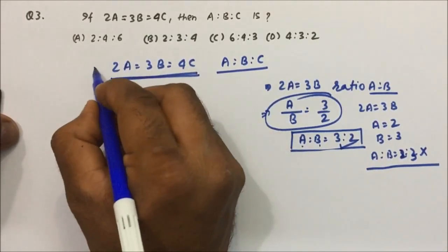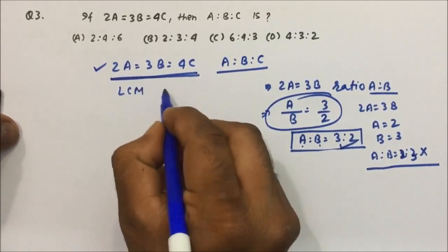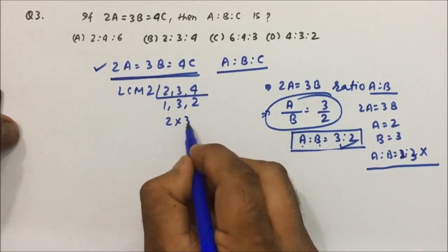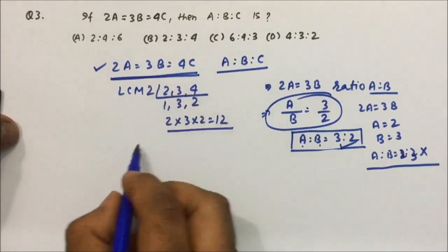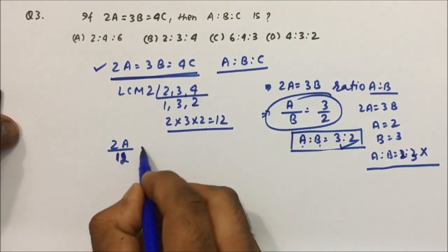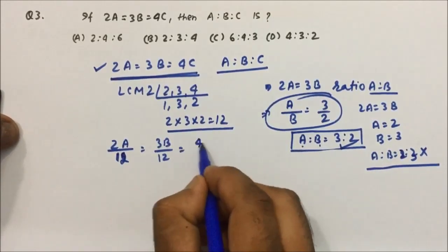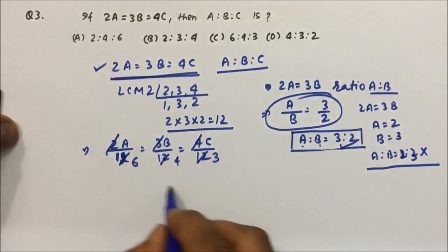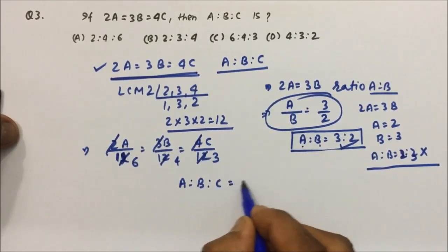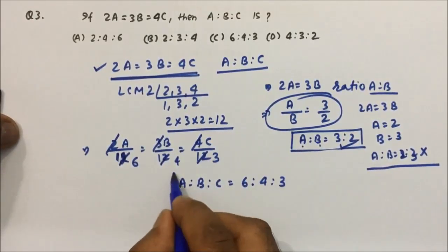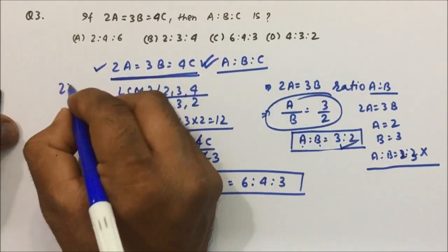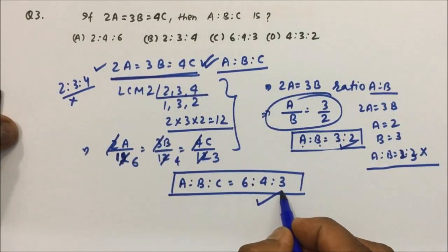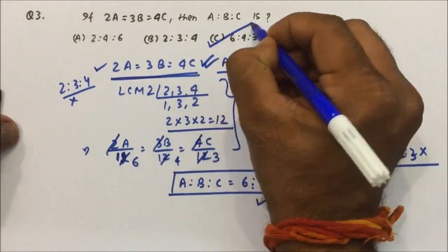For the full equation 2A = 3B = 4C, we take the LCM of 2, 3, and 4, which is 12. Divide the equation by 12: 2A/12 = 3B/12 = 4C/12. This simplifies to A/6 = B/4 = C/3. So the ratio A:B:C = 6:4:3. We cannot directly write the ratio as 2:3:4 — that would be wrong. The answer is 6:4:3, which is option C.